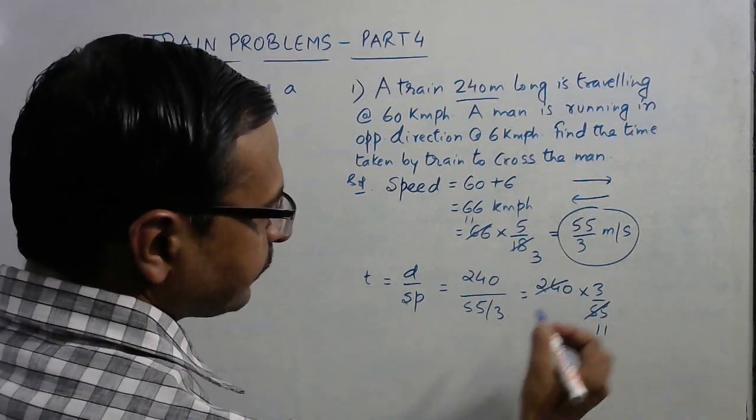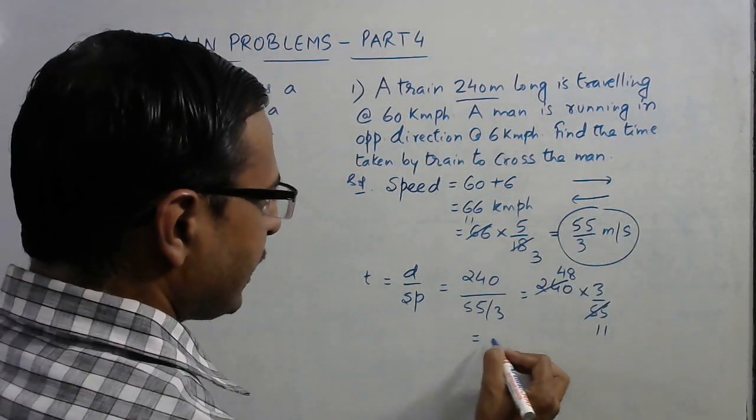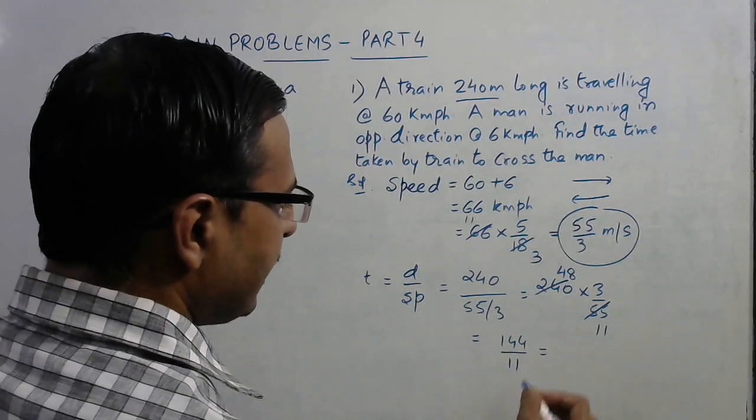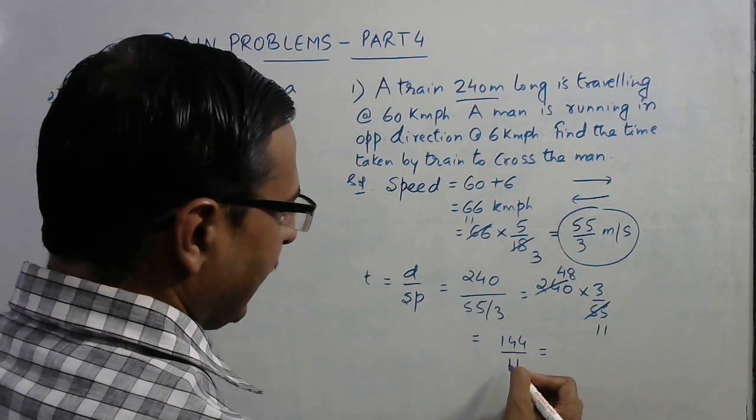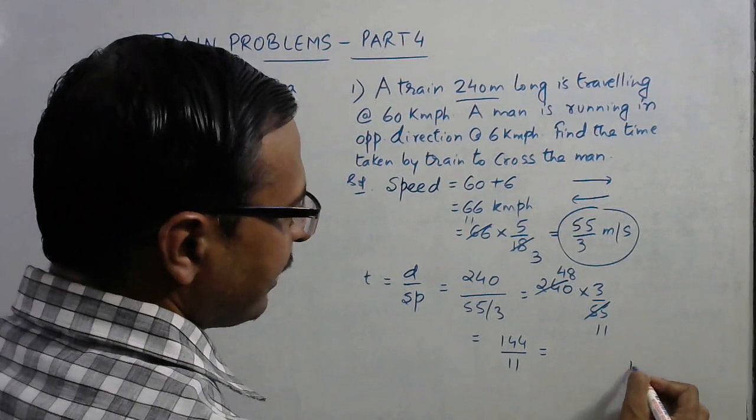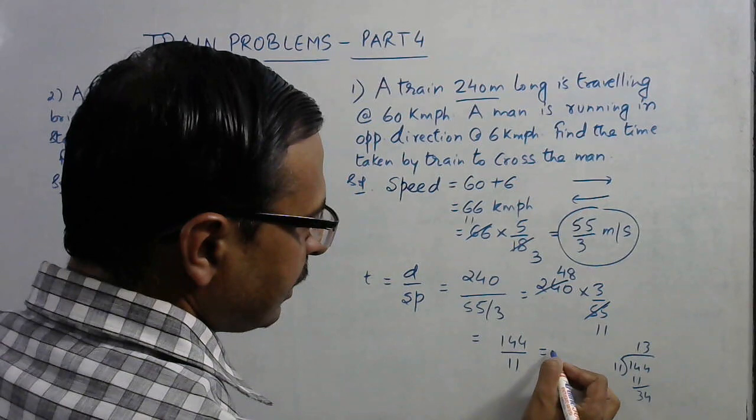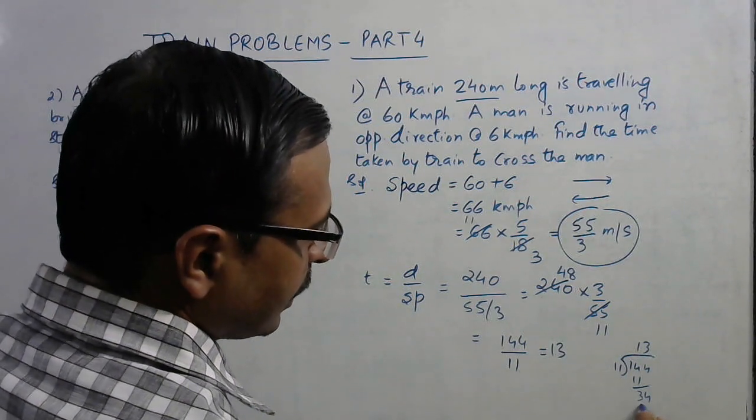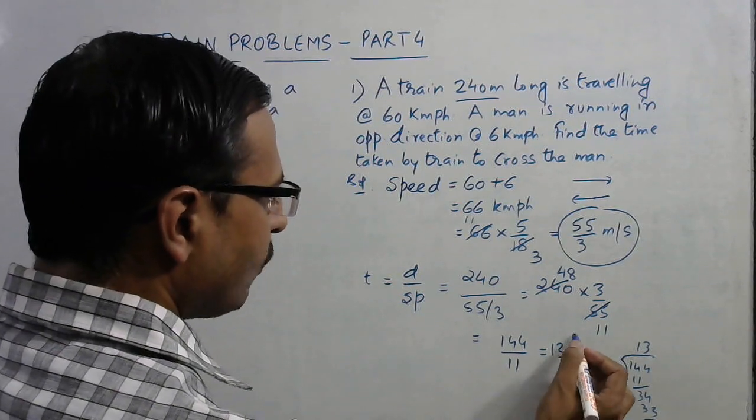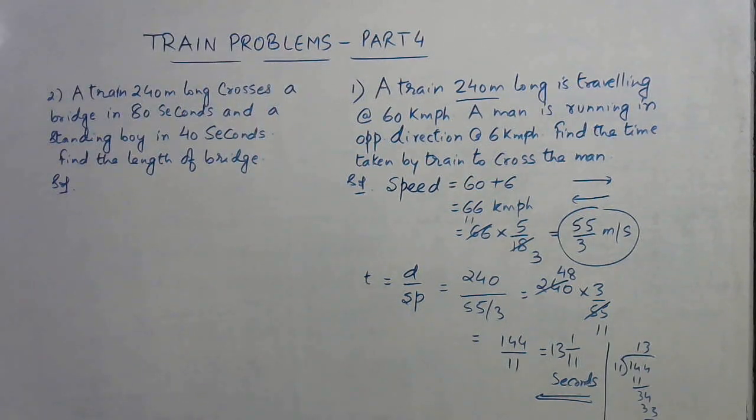I will use the mixed fraction for this: 144 by 11. If you divide 144 by 11, you will have 13 as the quotient and 1 as the remainder, so 1 by 11. So 13 and 1 by 11 seconds is the time taken for crossing the man.